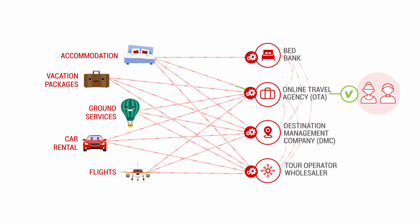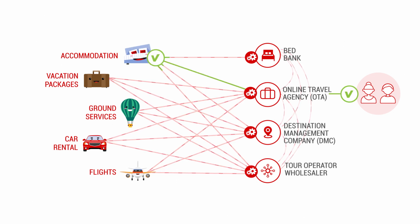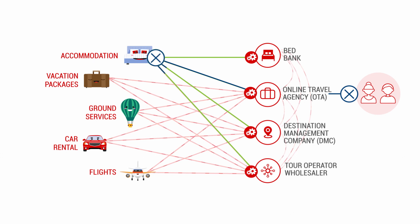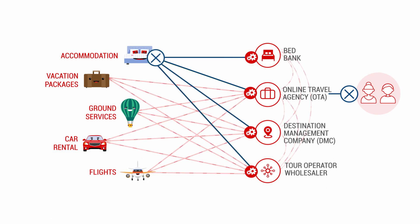If someone books me, the system updates my new status instantly and will automatically process my booking. If the booking is modified or cancelled, the booking engine will immediately reflect that I'm available in the system once again. This is my life cycle, like that of any other travel product.